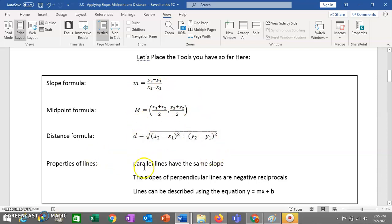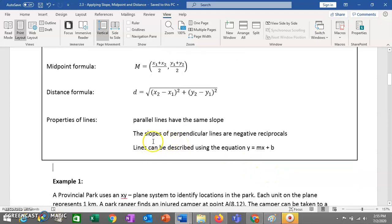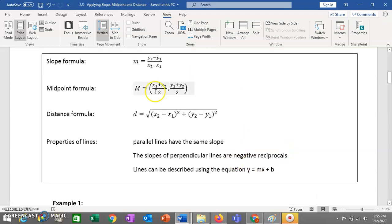So let's look at the tools that you have so far, because this is what you're going to be using to solve the problems in this lesson. So you have your slope formula, you have your midpoint formula, you have your distance formula. You know some properties of lines, you know hopefully that parallel lines have the same slope as each other. If you have perpendicular lines, their slopes are negative reciprocals. You know that the equation of a line fits y equals mx plus b. Something else I should have included in here, you also know c squared equals a squared plus b squared.